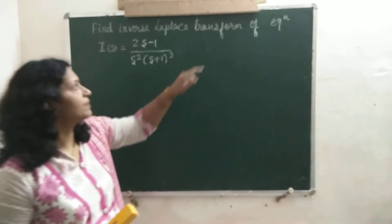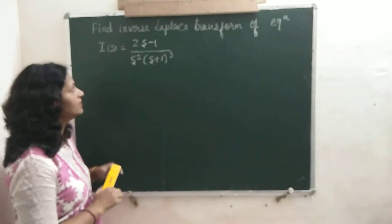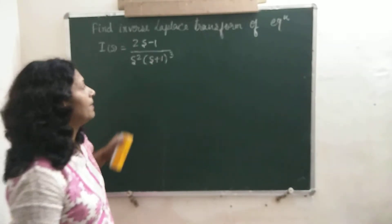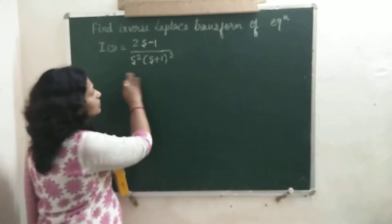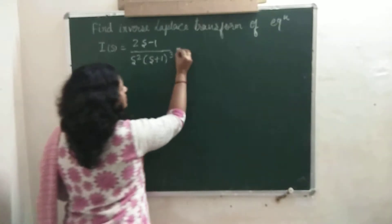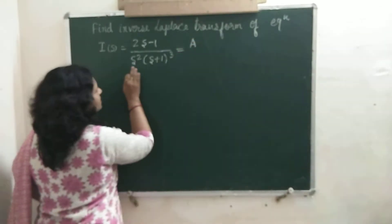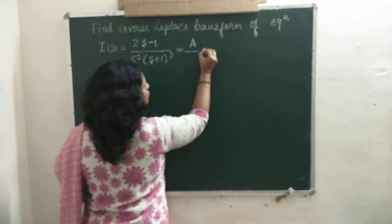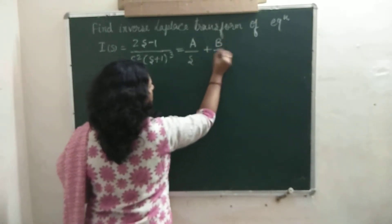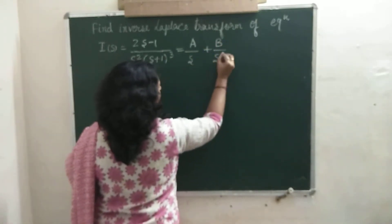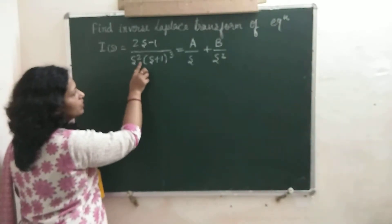To find the inverse Laplace transform of this equation, first we will apply partial fractions to factorize this equation. For the term S squared, there will come two factors: A upon S and B upon S squared. This is for S whole square.